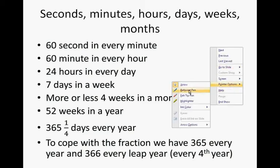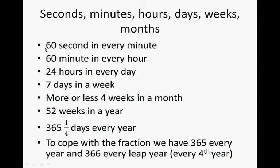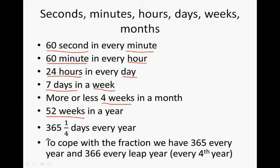Let's quickly recap that with a pen. There are 60 seconds in a minute. In every hour there are 60 minutes. Every day has 24 hours, every week has seven days. There are more or less four weeks in a month — some months have a bit more. There are 52 weeks in a year, and 365 days is what we use to do calculations.